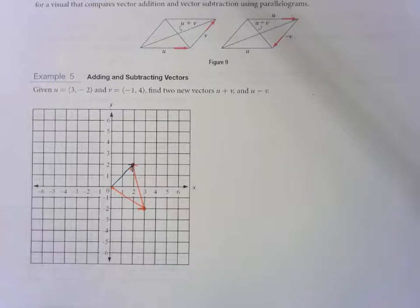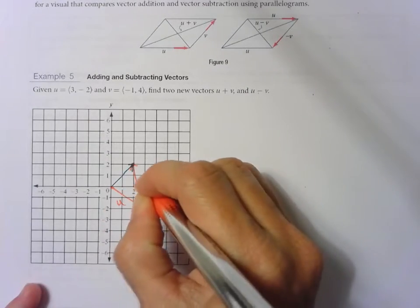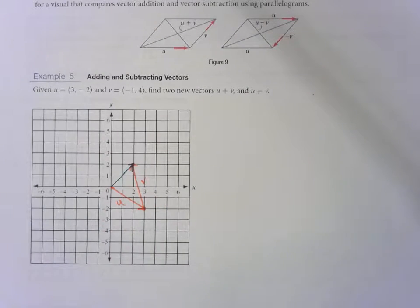Our resultant vector is this one. So how do we calculate that vector? This was our u, this was our v, and this is our answer, our resultant vector.